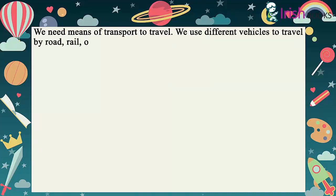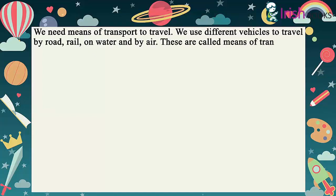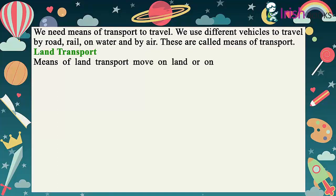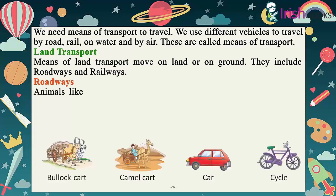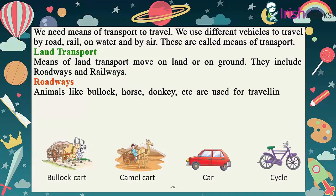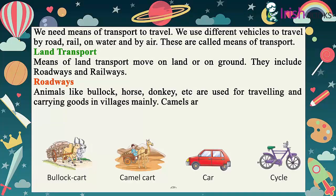Land Transport: Means of land transport move on land or on ground. They include roadways and railways. Animals like bullock, horse, donkey etc. are used for travelling and carrying goods in villages mainly. Camels are used in deserts. The camel is called the ship of the desert.